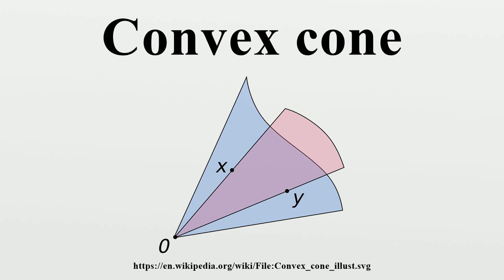Partial order defined by a convex cone. A pointed and salient convex cone C induces a partial ordering on V, defined so that x ≤ y if and only if y minus x is in C. Sums and positive scalar multiples of valid inequalities with respect to this order remain valid inequalities. A vector space with such an order is called an ordered vector space. Examples include the product order on real-valued vectors and the Loewner order on matrices.